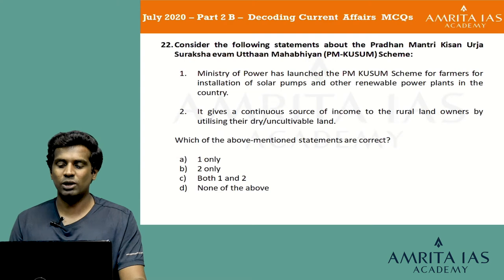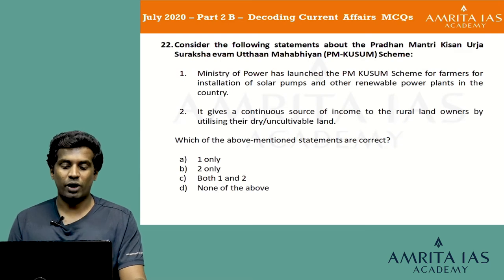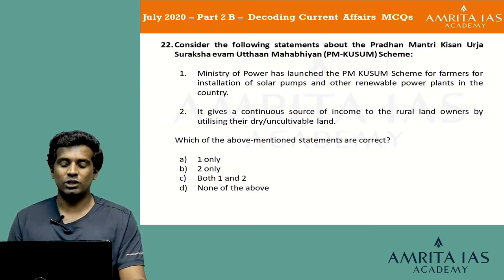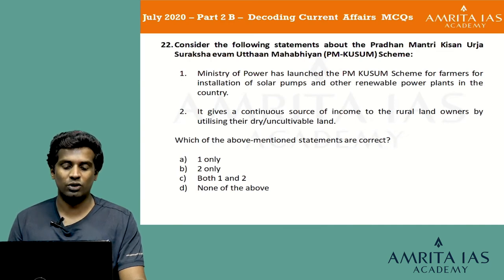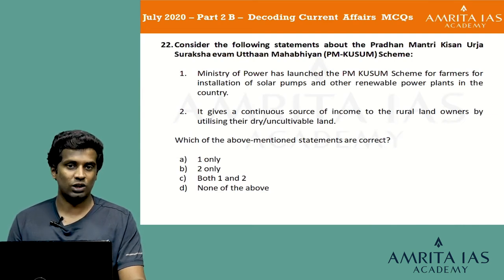Consider the following statements about the Pradhan Mantri Kisan Urja Suraksha Evam Utthan Mahabhiyan or PM Kusum scheme: 1) Ministry of Power has launched the PM Kusum scheme for farmers for installation of solar pumps and other renewable power plants in the country. 2) It gives a continuous source of income to the rural landowners by utilizing their dry and uncultivable land. Which statements are correct? Option A: 1 only, option B: 2 only, option C: both 1 and 2, option D: none of the above.